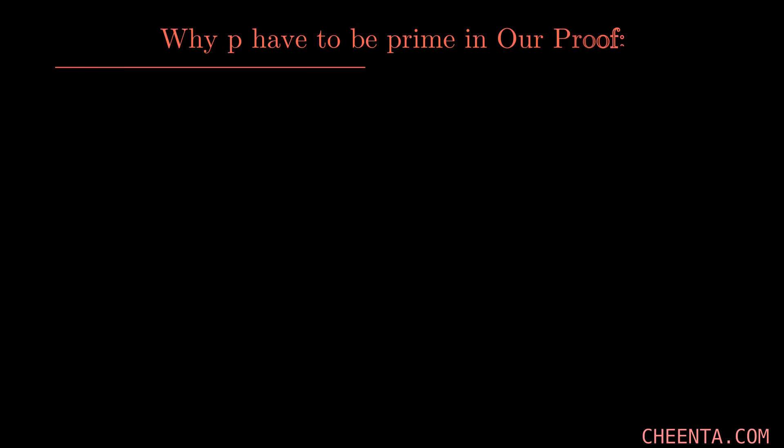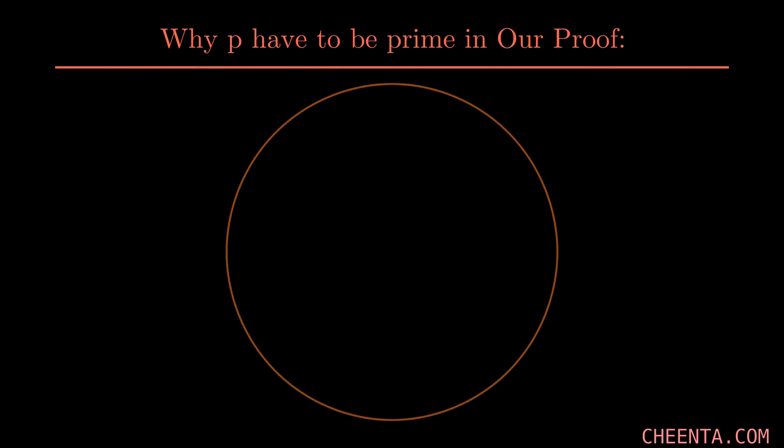You may think that p can be any number from our proof, but it is not the case. Because if we take p as a composite number, our proof will be broken. Let's take a circle and let's take p equals 9 to see an example why p can't be a composite number. Now like before, let's take a point exactly opposite to the upper yellow, the blue one, and join those two with a dotted line.